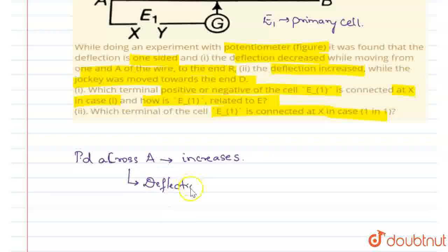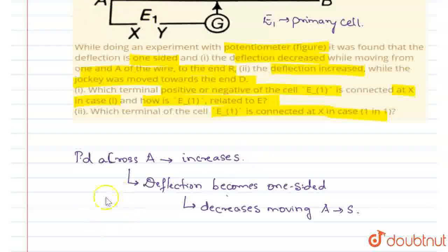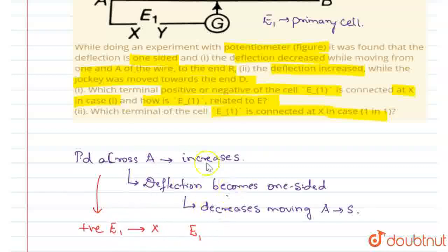So deflection becomes one-sided and decreases while moving from A to S. This case is possible only when you connect the positive terminal of the cell E1 at the X point. So positive of E1 will be connected at X. When the positive terminal is connected at X and the potential difference is increased, it will be at higher potential, which means E1 is greater than E.